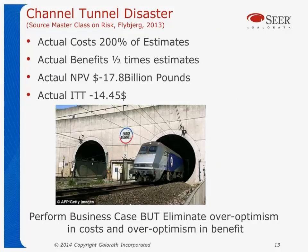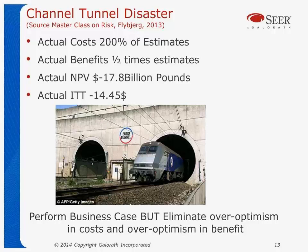There are lots of examples of this. When they were building a tunnel from the UK to Europe, the actual costs were about 200% of the estimates, and the actual benefits were about half. The net present value was about minus 17.8 billion pounds — it cost about 17.8 billion pounds more than it was going to return. But it's interesting: I gave this briefing somewhere in Europe, and they said the original estimates were over twice as much — they were told to cut them because it wasn't cost-effective with the estimates they had. Well, they cut their estimates, and the result was a disaster.